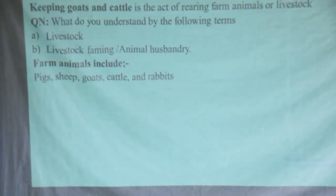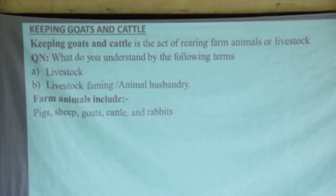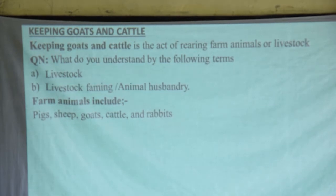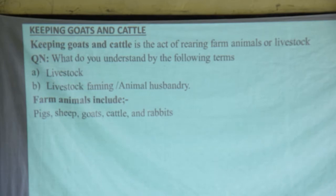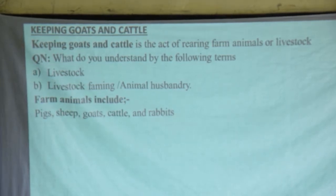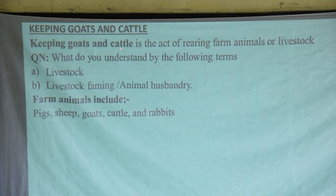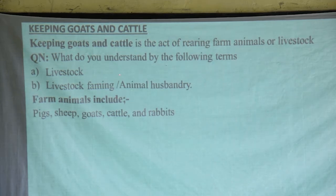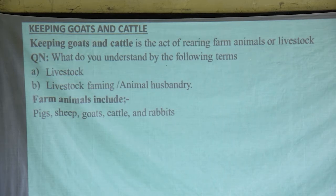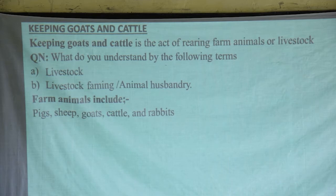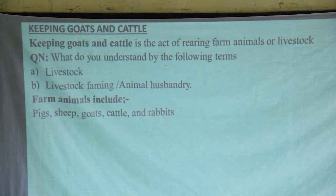What do we mean by these terms? Keeping goats and cattle simply means it is the act of rearing farm animals or livestock. When we talk about this term, we need to understand properly what livestock is and what livestock farming is. Livestock simply means farm animals — animals that you can rear or keep on your farm. They can be different animals: cattle, goats, sheep, and more. Those are all farm animals.